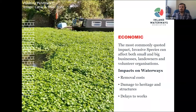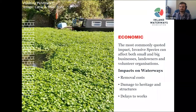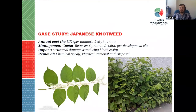A quick case study on Japanese knotweed: each year it costs in the region of £165 million to the UK economy — a figure from 2010 that has almost certainly increased since. This species was introduced by the Victorians in the 19th century for ornamental gardens and to stabilise railway banks. With removal costs of about £5,600 to £11,000 per site, it becomes quite a hefty problem to deal with.